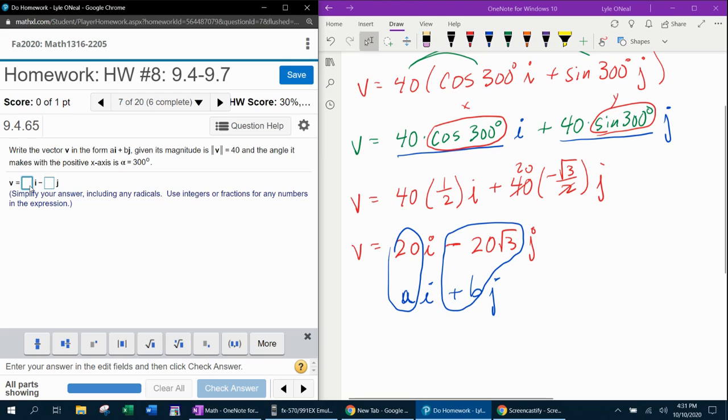So for A, the coefficient of i, that should be 20. Oh, and notice they already put the minus, so I don't need to put minus. I just need to put 20√3. All right, watch that closely. If they already include the minus, you don't have to include it in the box.